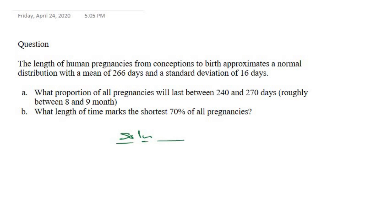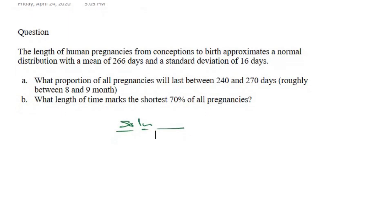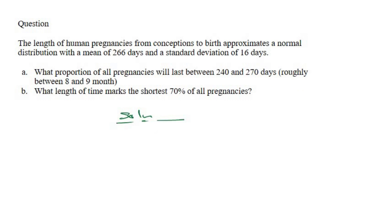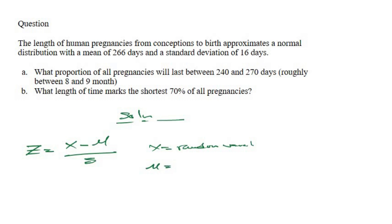Let me walk us through normal distribution probability. Normal distribution makes use of z. Initially you'll be given x from the question, and we find z using the formula: z equals x minus mu, all over sigma — where x is the random variable, mu is the mean, and sigma is the standard deviation.